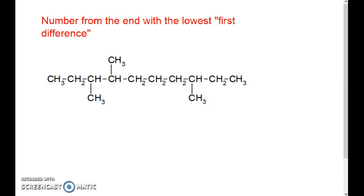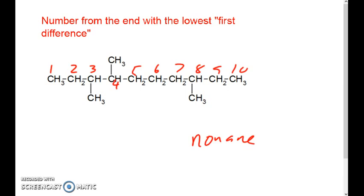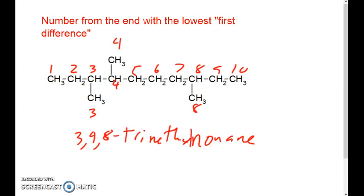So this one's a particularly tricky one — take a moment, see if you can figure it out, and hit pause. In this case, if we number from left to right, we can see we've got ten carbons, which makes it a decane. We've got substituents at three, four, and eight — which makes it 3,4,8-trimethyldecane.